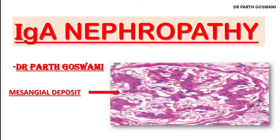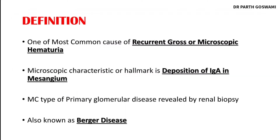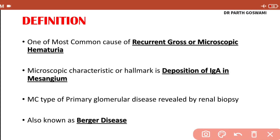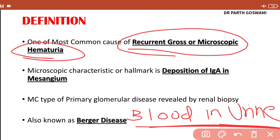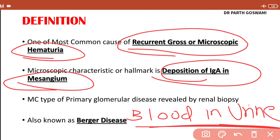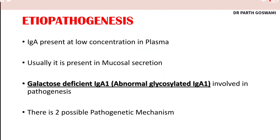Hello everyone, myself Dr. Parth Goswami, and today I am going to teach you about IgA nephropathy, a type of nephrotic syndrome. The definition of IgA nephropathy is that the patient will have recurrent gross or microscopic hematuria — blood in the urine. The hallmark of the disease is deposition of immunoglobulin A in the mesangium. It is the most common type of primary glomerular disease revealed by renal biopsy, and it is also known as Berger's disease.